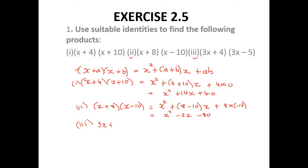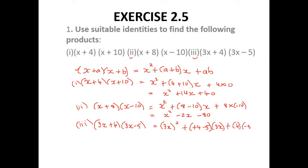For the third sum: (3x + 4)(3x − 5). Applying the identity: (3x)² + (4 + (−5))(3x) + 4×(−5), which gives 9x² + (−1)(3x) − 20, so 9x² − 3x − 20.